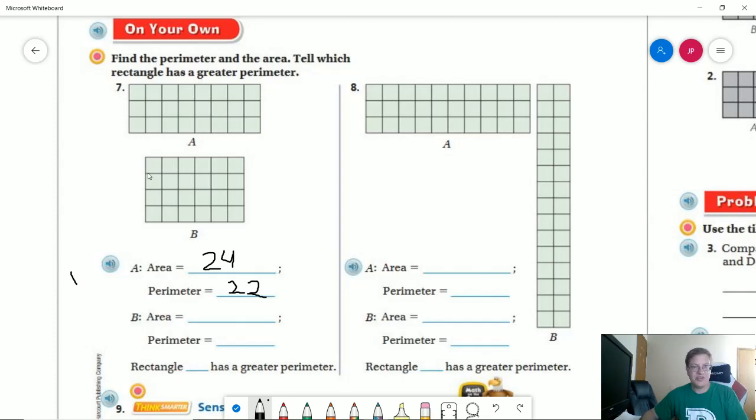My area for the second one is going to be four times six. That would give us 24, which if we get a different number for this on this lesson, we probably need to double check our math for one or both of those, because all of these should have the same area, but we're working with different perimeters today. So our perimeter for this, we would be four plus six would give us 10, four plus six would give us 10, and 10 plus 10 would give us 20. And so rectangle A is going to have a greater perimeter by two.